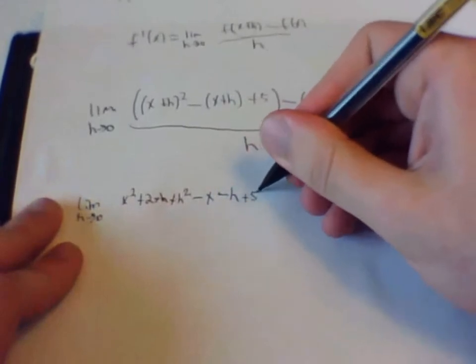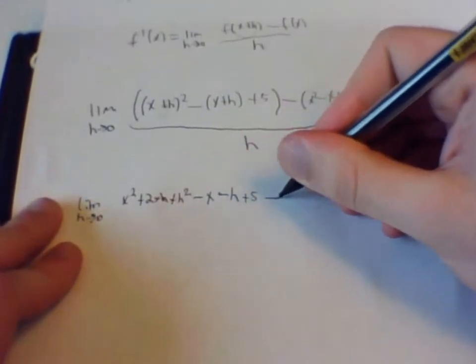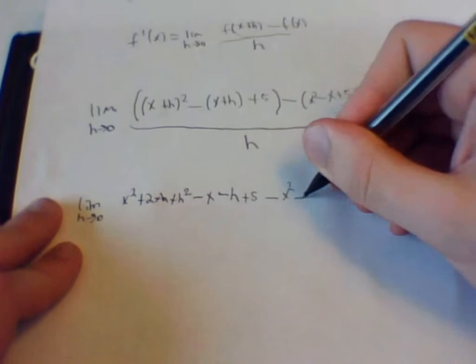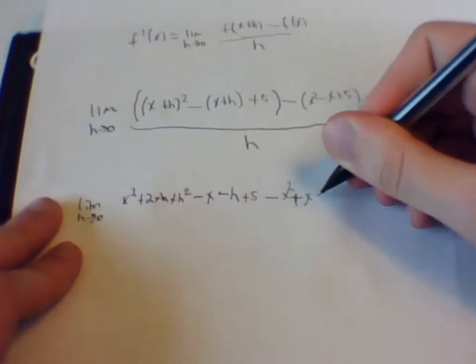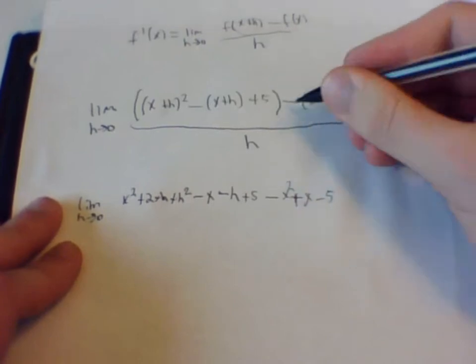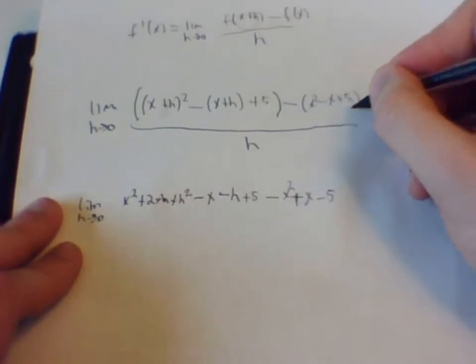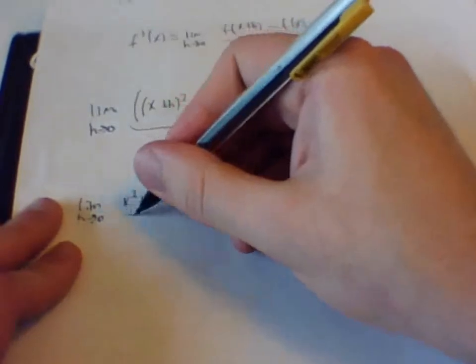Plus 5. And it is going to be minus x squared plus x minus 5, distributing the negative all over h.